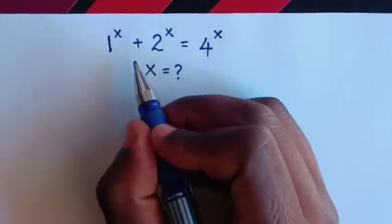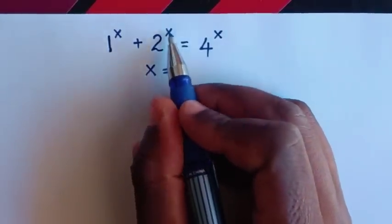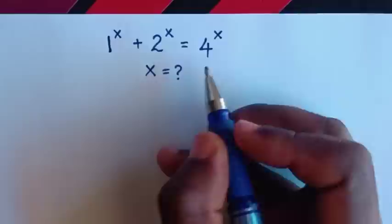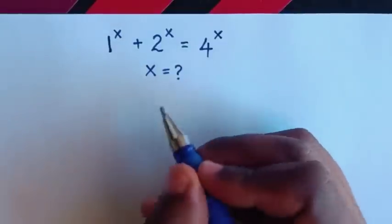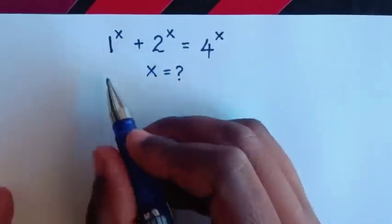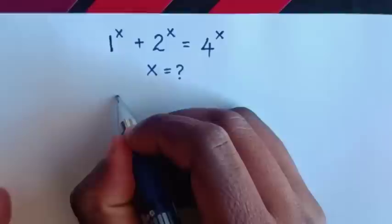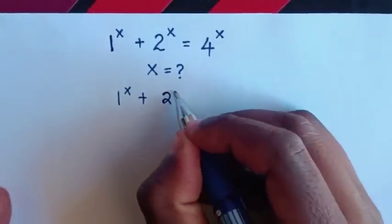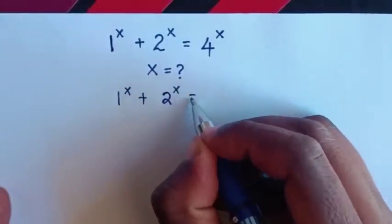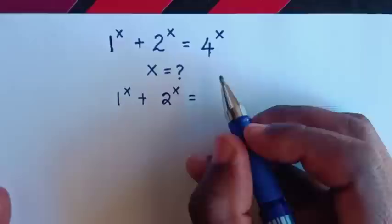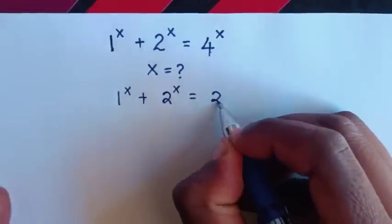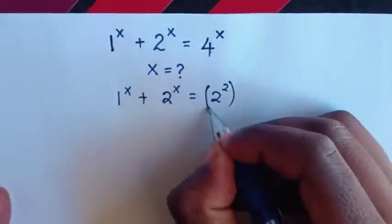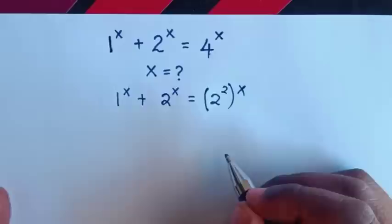How to solve 1 power x plus 2 power x is equal to 4 power x, to find the value of x? So from here, 1 power x plus 2 power x is equal to 4, which is the same as 2 squared, bracket power x.